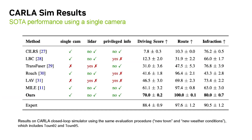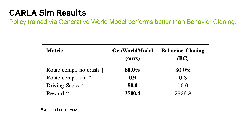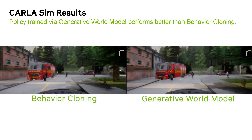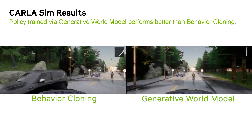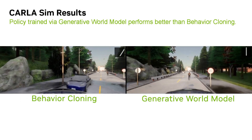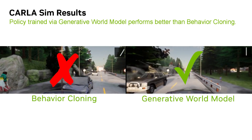Among comparable models in the CARLA leaderboard 1.0, we achieve state-of-the-art driving, route completion, and infraction scores. We also compare our model against behavior cloning in the CARLA simulator. The significantly higher scores suggest that the world model trained policy is more robust to covariate shift.